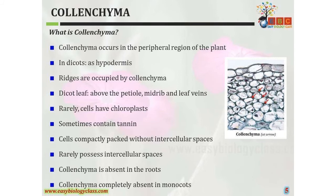Colenchyma cells are compactly packed without intercellular spaces. Colenchyma is absent in the roots. Importantly, colenchyma is completely absent in monocots — always remember this point. Colenchyma is always found in dicots. This is because dicots have larger plants that require mechanical strength provided by colenchyma tissue.